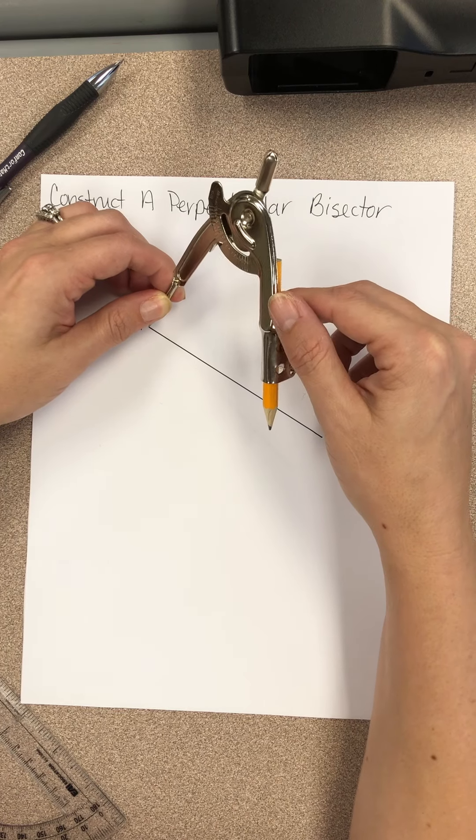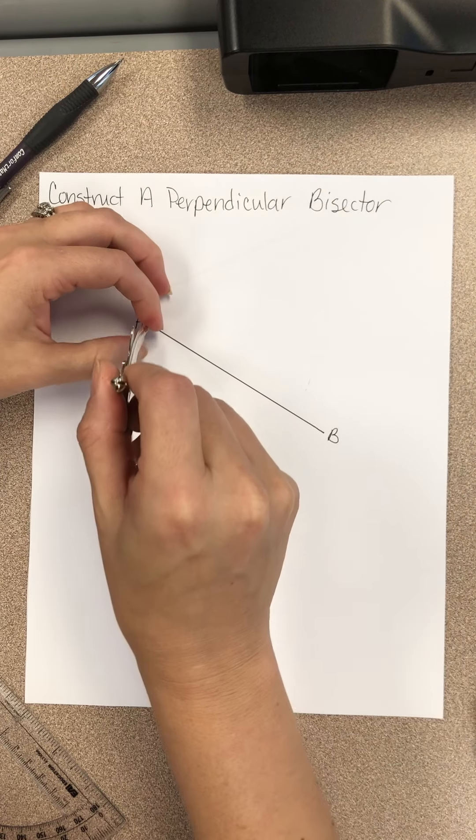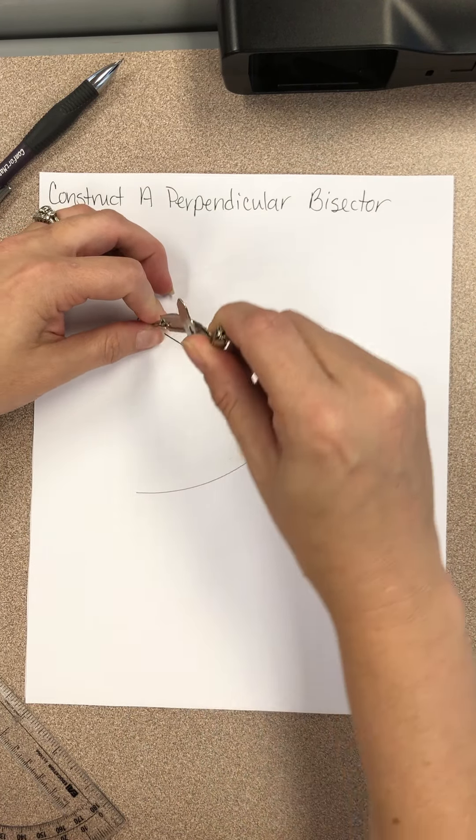Make a very large arc that extends well above and well below the segment. So in other words, I'm gonna do it like this.